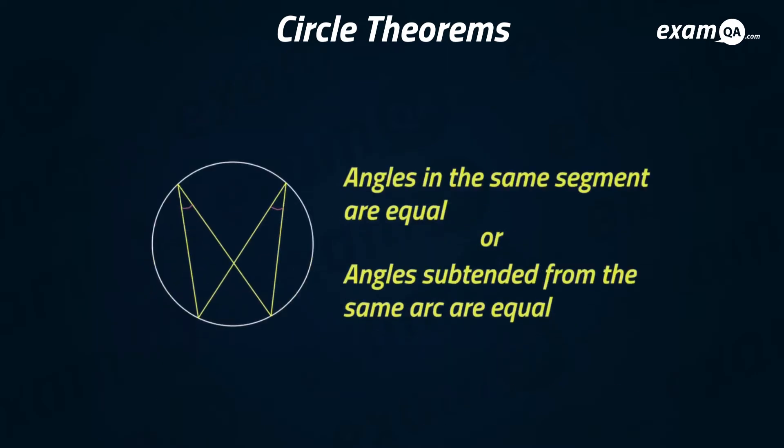There's two ways to say this theorem, but basically when you see this sort of bow tie shape, these two angles are the same. So if this was 40 degrees, this has to be 40 degrees. And if this was 20 degrees, this has got to be 20 degrees.